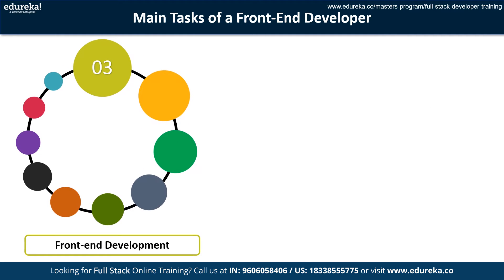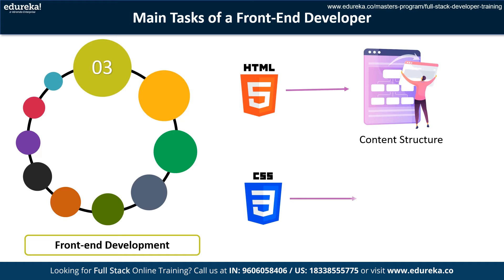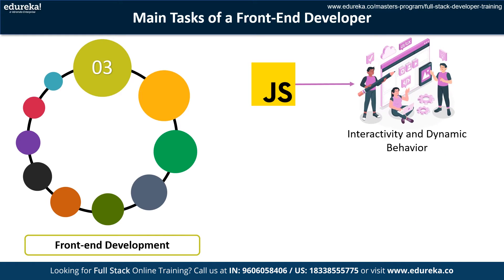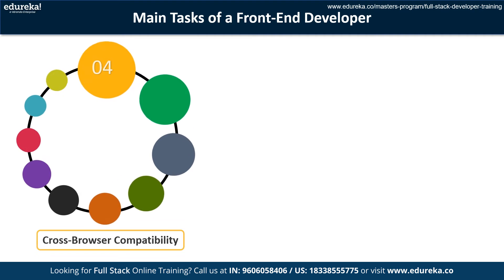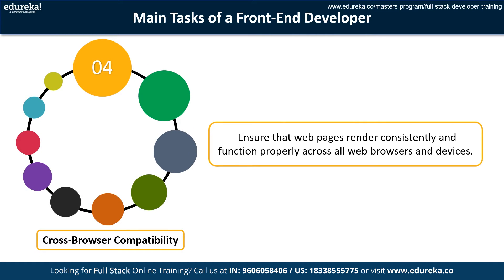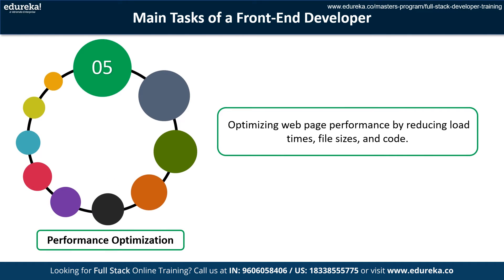Next, front-end development: writing code to implement web page design and functionality, which includes HTML for content structure, CSS for styling and layout, and JavaScript for interactive and dynamic behavior. Front-end developers use frameworks and libraries such as React, Angular, and Vue.js to speed up development. Next, cross-browser compatibility: ensuring web pages render consistently across all browsers and devices. Next, performance optimization: reducing load times, file sizes, and code using techniques like code splitting, lazy loading, and image optimization.